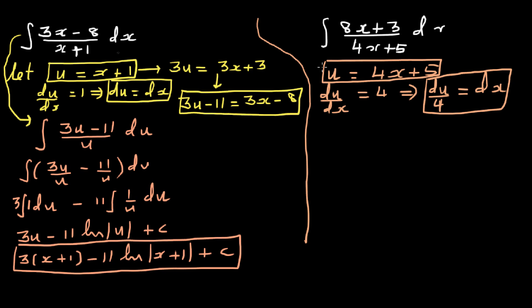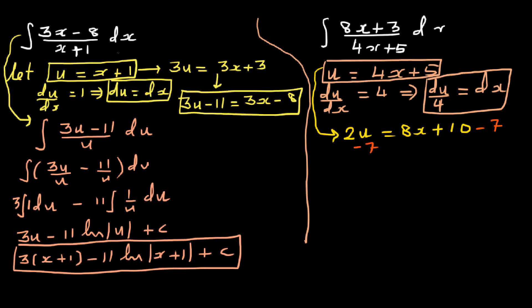Now I have to write the numerator in terms of u. I can see 4x here and I want 8x, so I multiply both sides by 2: 2u equals 8x plus 10. I want 8x plus 3, so I take away 7 from both sides: 2u minus 7 equals 8x plus 3.